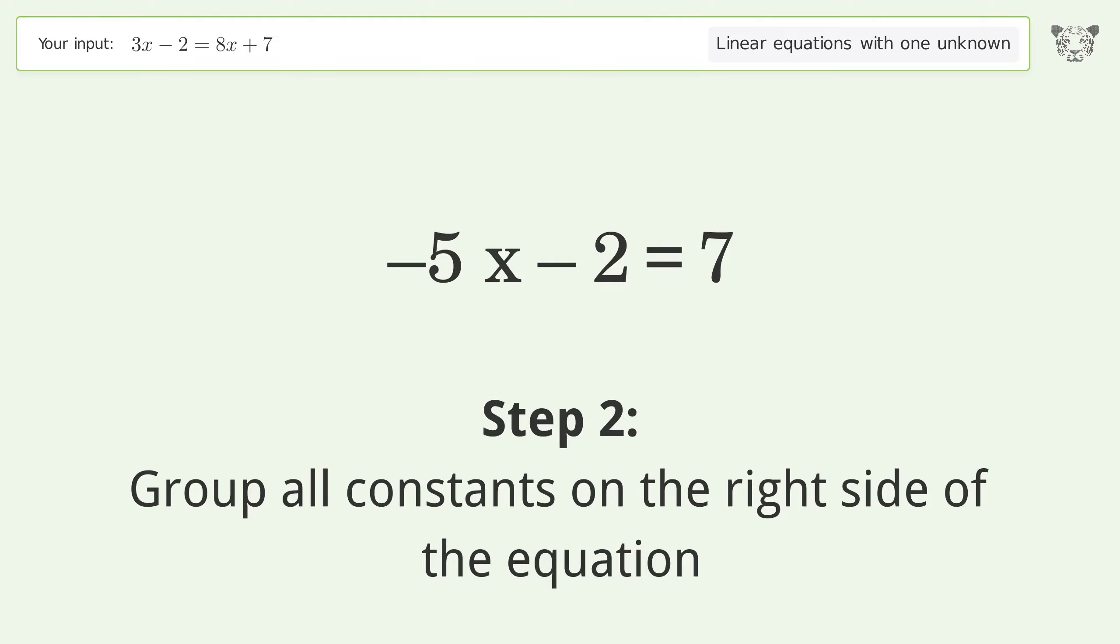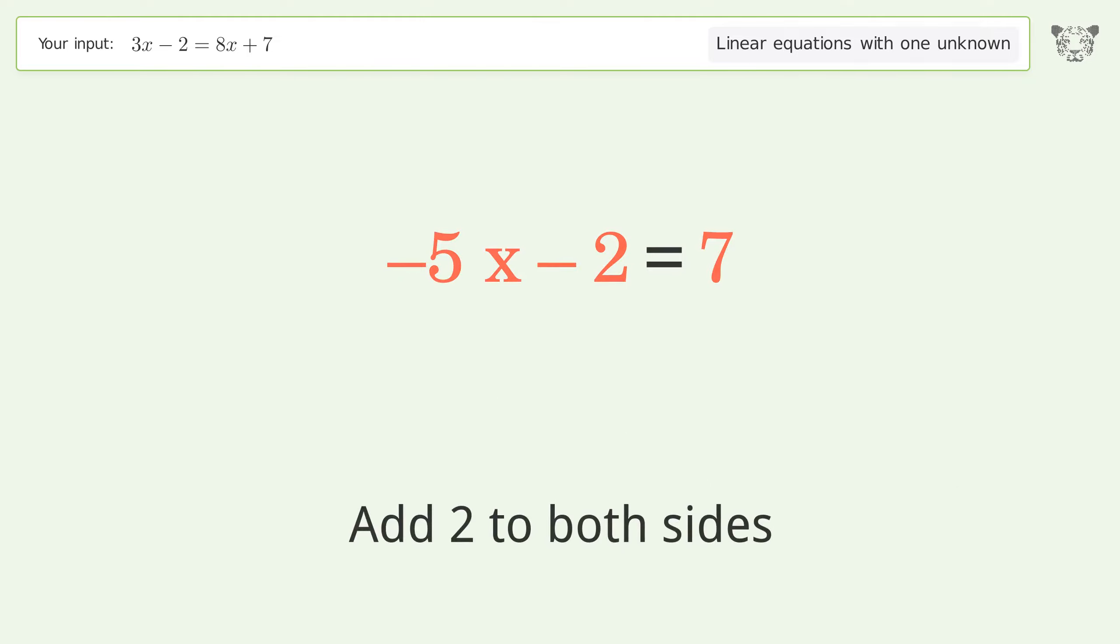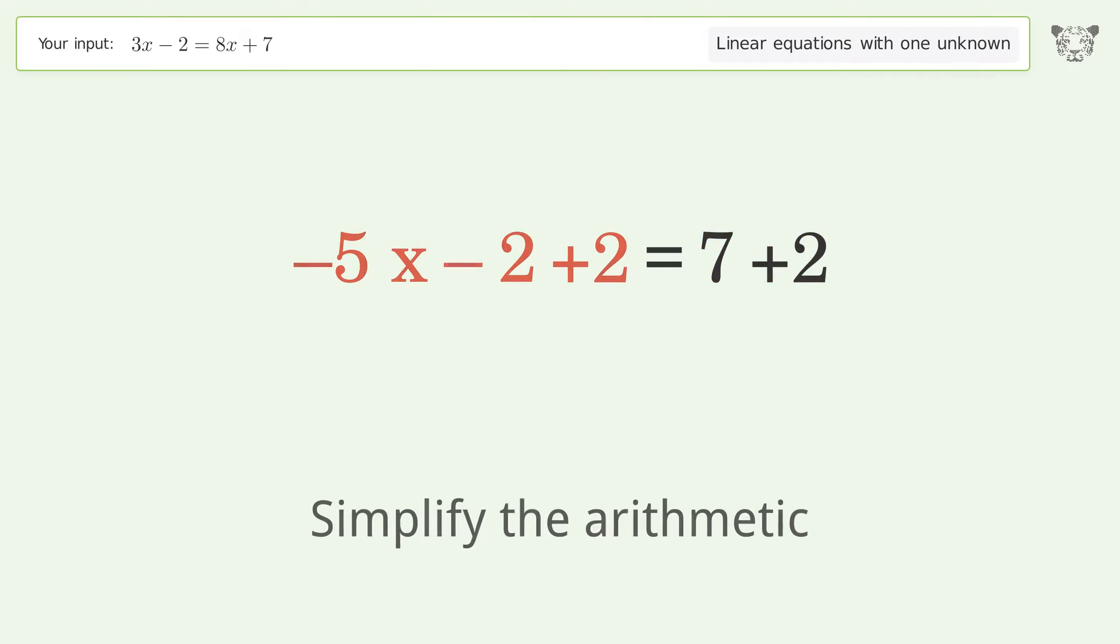Group all constants on the right side of the equation. Add 2 to both sides. Simplify the arithmetic.